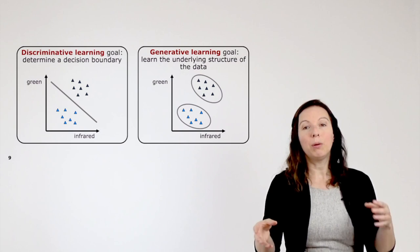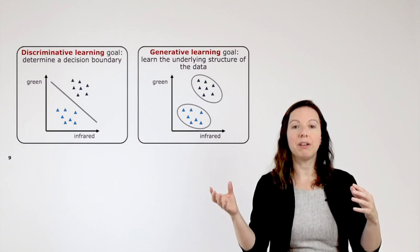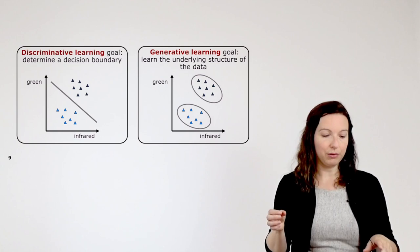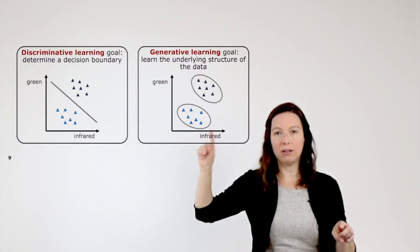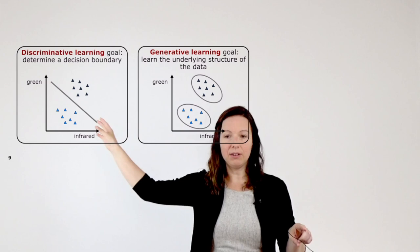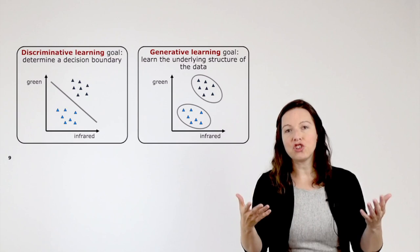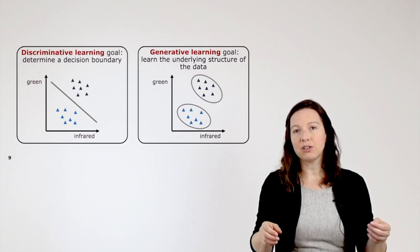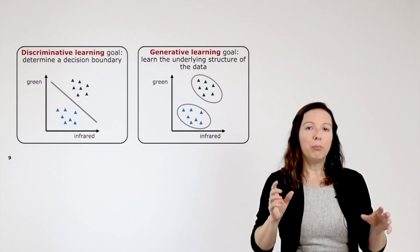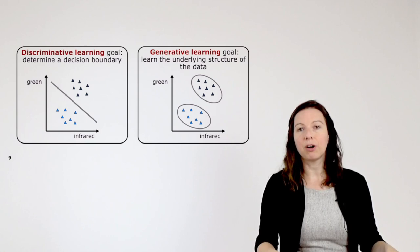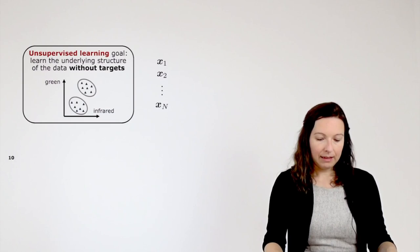There's a distinction we can make when talking about classification: discriminative learning and generative learning. Discriminative classifiers have the goal to determine a decision boundary — given two classes with two features each, you want to discriminate between the classes. In contrast, generative classifiers aim to learn the underlying structure of the data, and once you have learned that structure you can derive a decision boundary from it, so it can also be used for classification.